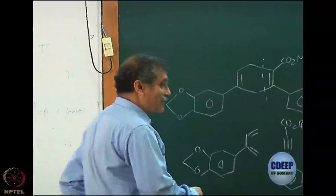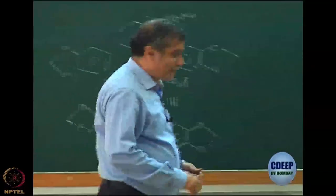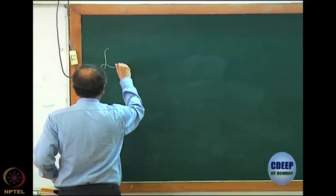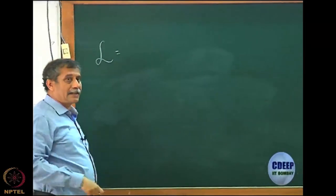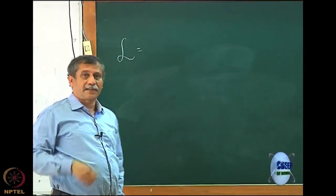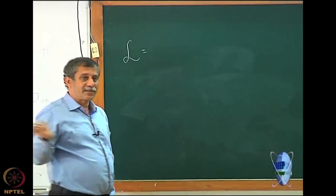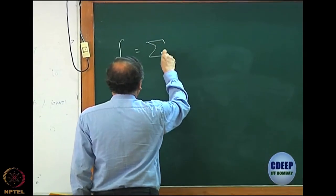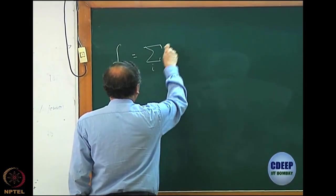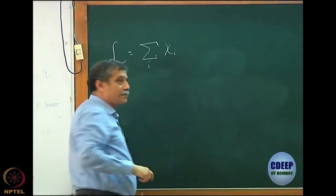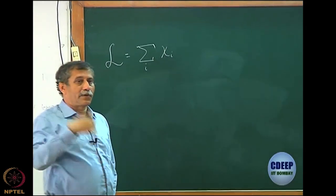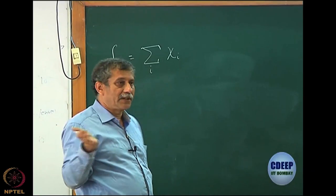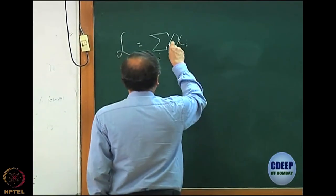Let us go back to the Lagrangian once again. I hope all of you can write the Lagrangian. It is first the energy and the constraints. The energy was — if you remember — we are going back to spin orbitals after knowing how to do the spin integration, going back to the spin orbitals for the general Hartree-Fock equations.